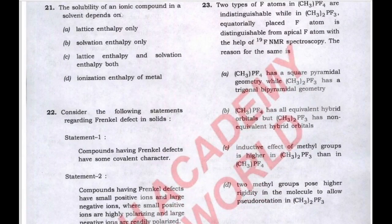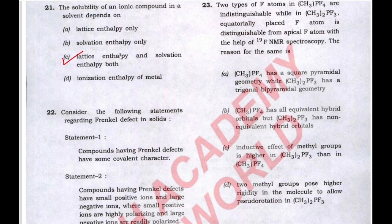In the next question, the solubility of an ionic compound in a solvent depends on both lattice enthalpy and solvation enthalpy. Lattice enthalpy refers to the energy required to break the ionic bonds in the solid crystal lattice. If lattice enthalpy is high, the compound tends to be less soluble. Both lattice enthalpy and solvation enthalpy play important roles. The correct answer to question 21 is C.